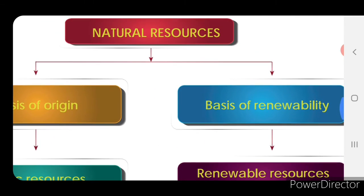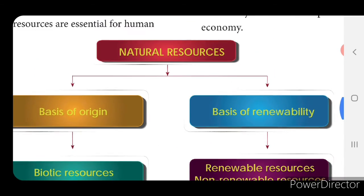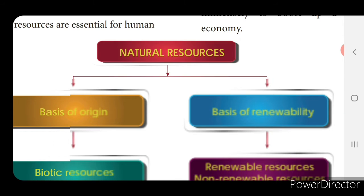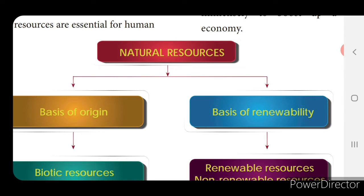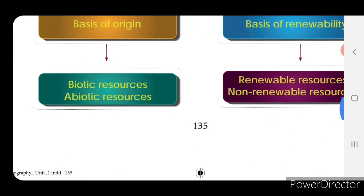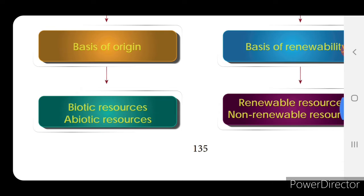Now we will see the classification. Natural resources are classified into two categories: based on origin, or based on renewability. Based on origin, they are divided into biotic resources and abiotic resources.